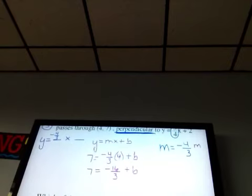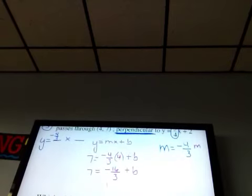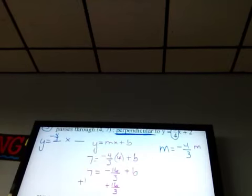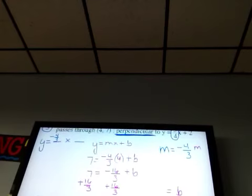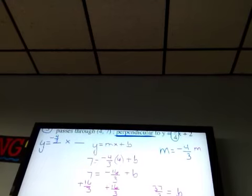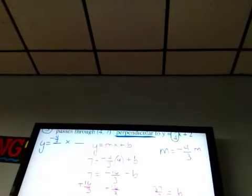7 equals negative 16/3 plus b. And then add 16/3 to both sides. And I get b equals 37/3. And I fill that in to my other blank. y equals negative 4/3x plus 37/3.